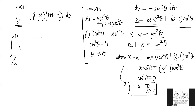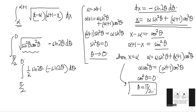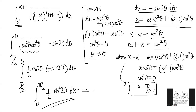Inside the root we have cos²θ · sin²θ, which after taking the square root gives sinθ cosθ = ½ sin2θ. Multiplied by dx = −sin2θ dθ, we get −½ sin²2θ dθ integrated from π/2 to 0. Taking the minus sign reverses the limits, giving the integral from 0 to π/2 of ½ sin²2θ dθ.